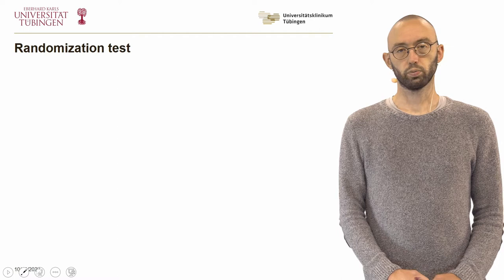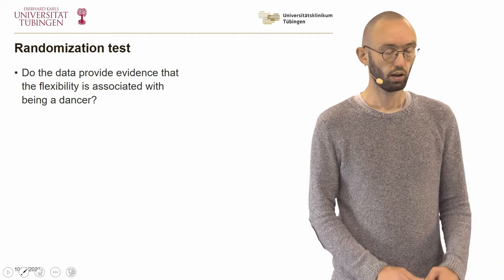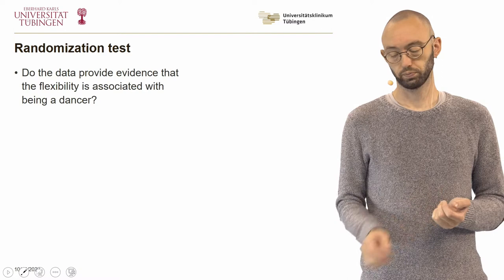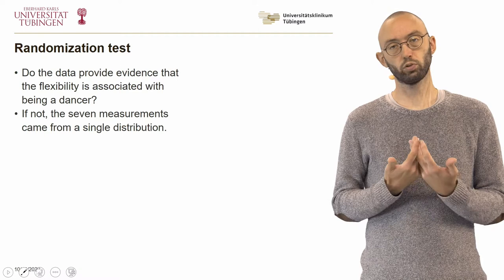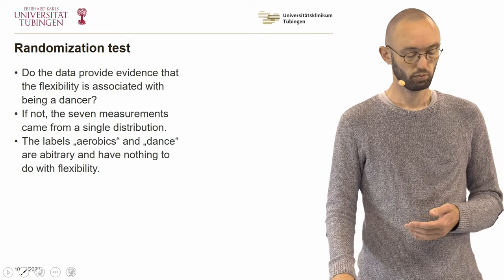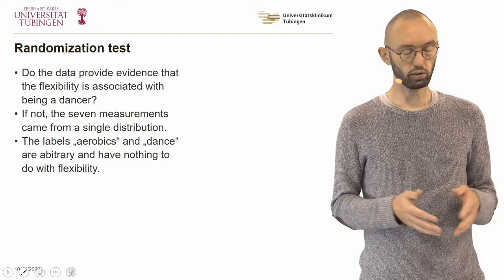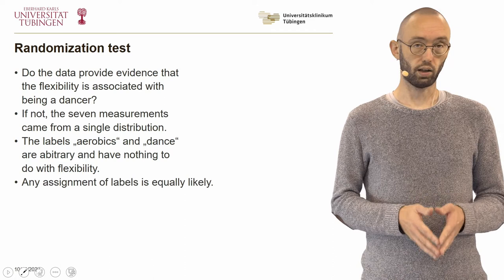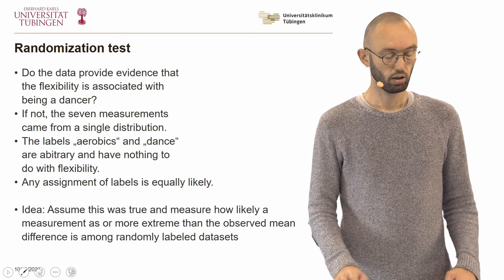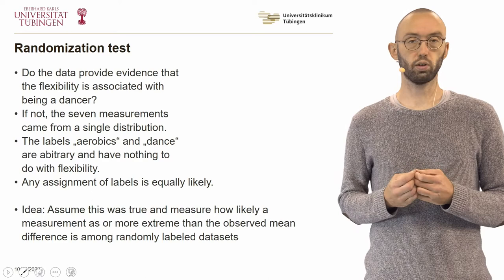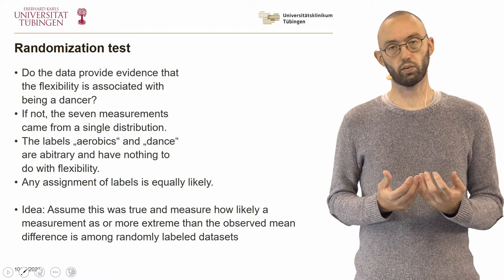Before we come to the t-test, there is actually something more intuitive called a randomization test. The randomization test asks: do the data provide evidence that trunk flexion is actually associated with being a dancer versus doing aerobics? If not, then all seven measurements can be regarded as coming from the same distribution, the labels assigned to individual samples would be arbitrary, and any assignment of these labels should be equally likely. The idea is to assume this is true and measure how likely a measurement as or more extreme than the observed mean difference is among randomly labeled datasets.